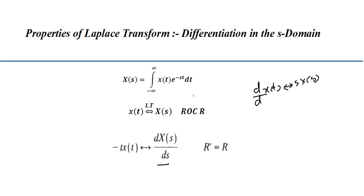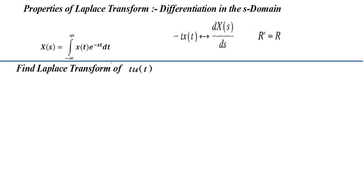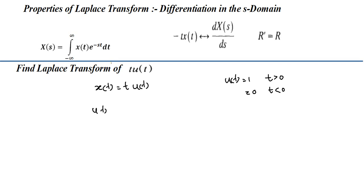Now we will discuss a problem related to this property. Find the Laplace transform of the signal t·u(t). We assume x(t) = t·u(t). Recall that u(t) equals 1 for t greater than 0 and 0 for t less than 0, and the Laplace transform of u(t) is 1/s with ROC sigma greater than 0.